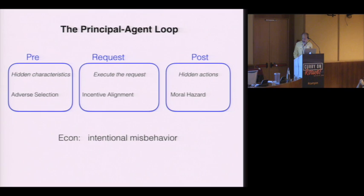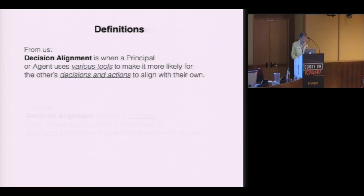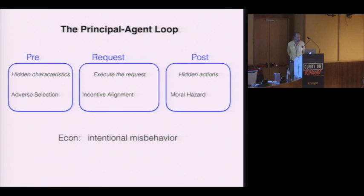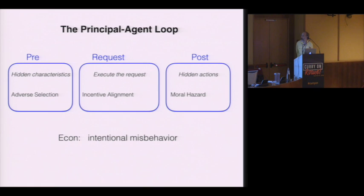Economics started off trying to think about these problems purely in terms of incentive alignment and found that because of hidden information they could not solve the problem that way — they needed to bring in other elements. So they divided the problem into three phases. Before the request is actually made, there's the pre-phase in which the principal faces the problem of hidden characteristics — things it does not know about the agent. In the post-phase, the principal is faced with the problem of hidden actions; it might not be able to tell what the agent actually did.